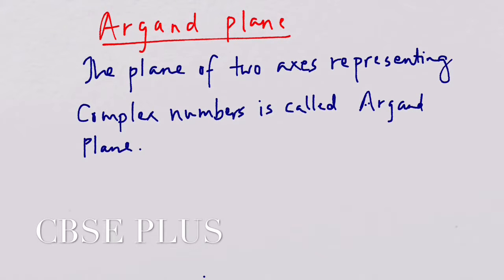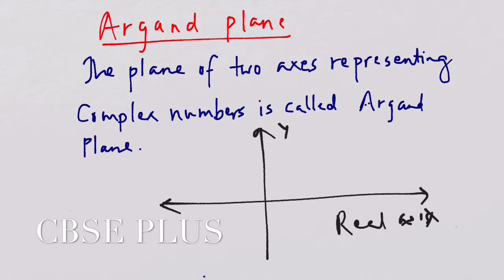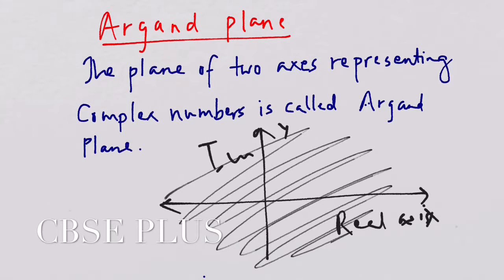This brings us to the term 'Argand plane.' Argand was a mathematician — it is just a name. The plane with two axes used to represent complex numbers is called the Argand plane. It has the x-axis as the real axis and the y-axis as the imaginary axis, forming a two-dimensional plane on which complex numbers can be represented.